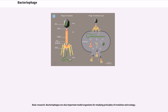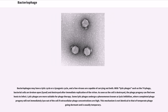Bacteriophages are also important model organisms for studying principles of evolution and ecology. Bacteriophages may have a lytic cycle or a lysogenic cycle, and a few viruses are capable of carrying out both. With lytic phages such as the T4 phage, bacterial cells are broken open — lysed and destroyed — after immediate replication of the virion. As soon as the cell is destroyed, the phage progeny can find new hosts to infect. Some lytic phages undergo a phenomenon known as lysis inhibition, where completed phage progeny will not immediately lyse out of the cell if extracellular phage concentrations are high.